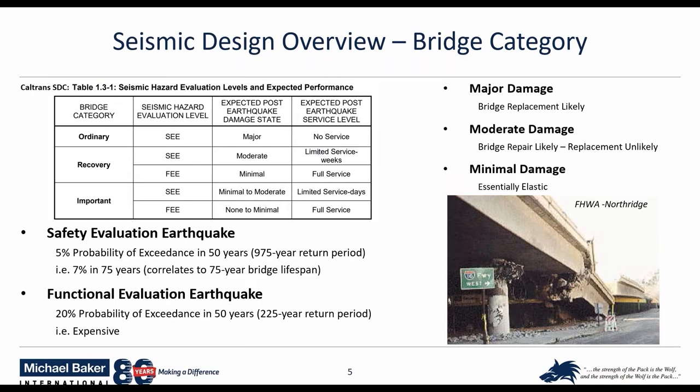The owner will set the category for the bridge, and that category determines the severity of the design earthquake and the expected performance of that bridge. For an ordinary bridge, the safety evaluation earthquake corresponds basically to a 75-year bridge lifespan. The expectation is that bridge will not collapse but will likely be replaced. As you work up in category and expected performance, it becomes more expensive. You might need base isolation for an essentially elastic structure. Categories are based largely on the route — if emergency vehicles need access, the bridge can't afford to be out of service.